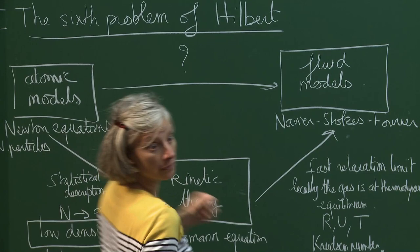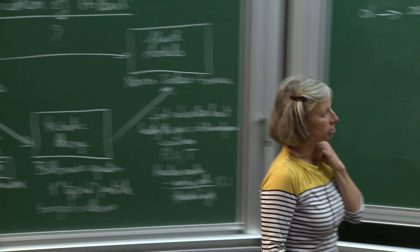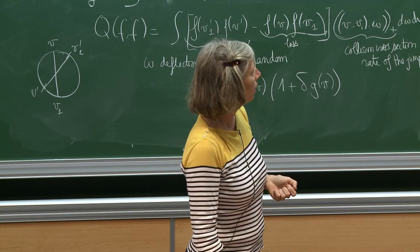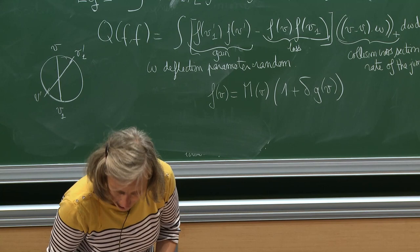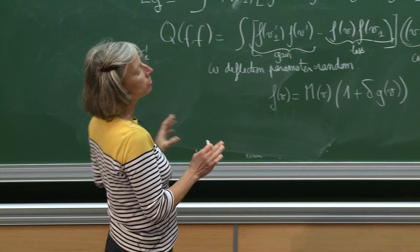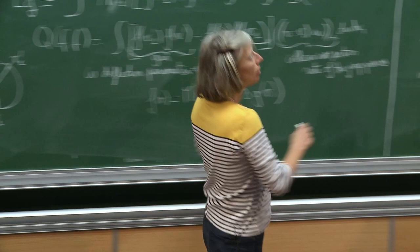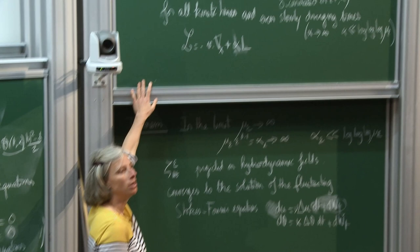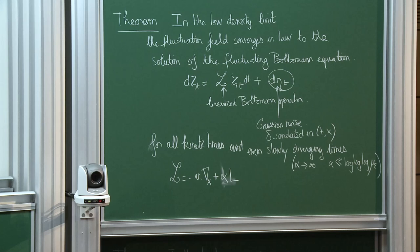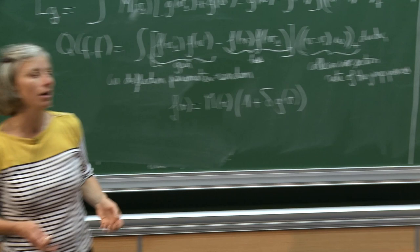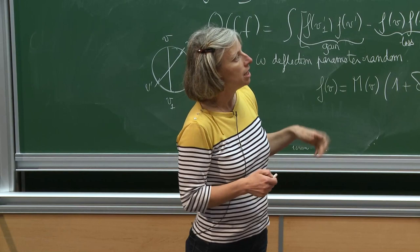So close to equilibrium, you can really go from particles to fluid equations, even taking into account all these fluctuations. That's the first thing I wanted to say. Now I'd like to explain the main ingredients for proving this central limit theorem.